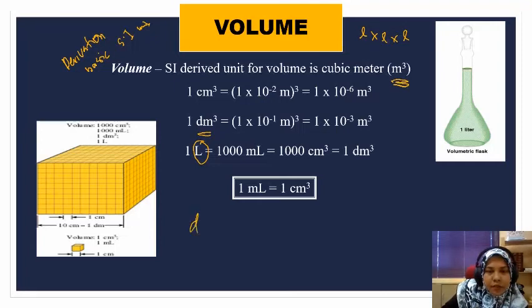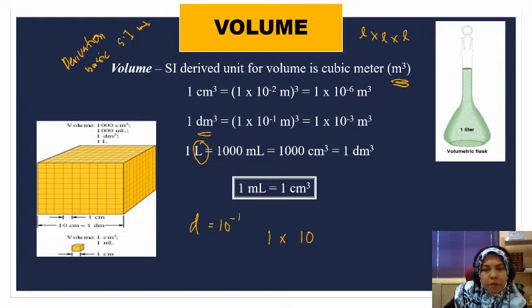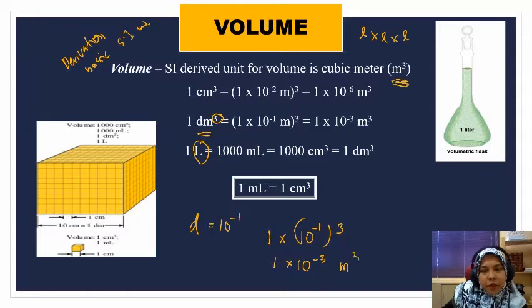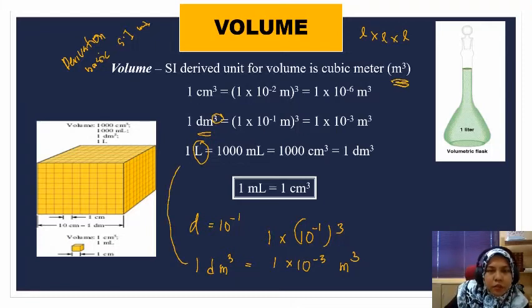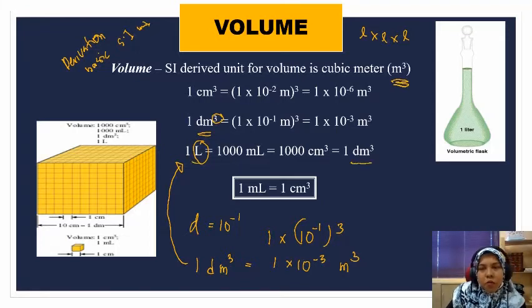Deci means 10 power of negative 1. So 1 decimeter cubic means 1 times 10 power of negative 1, and then you add cubic, so you times with 3. That gives you 1 times 10 power of negative 3 meter cubic, equal to 1 decimeter cubic. This is very important in chemistry because it's equivalent to 1 liter.